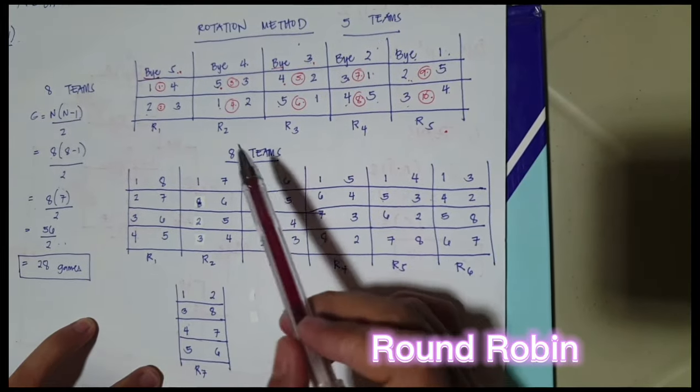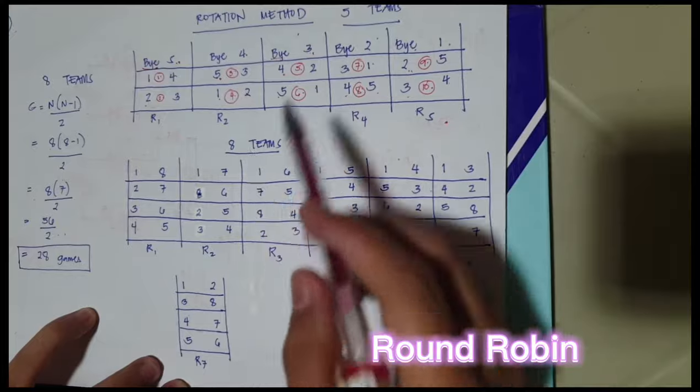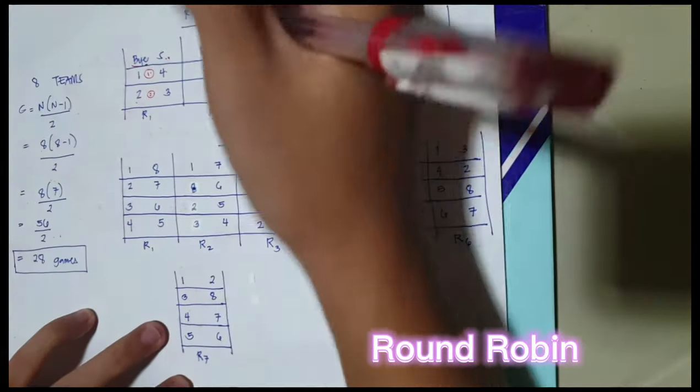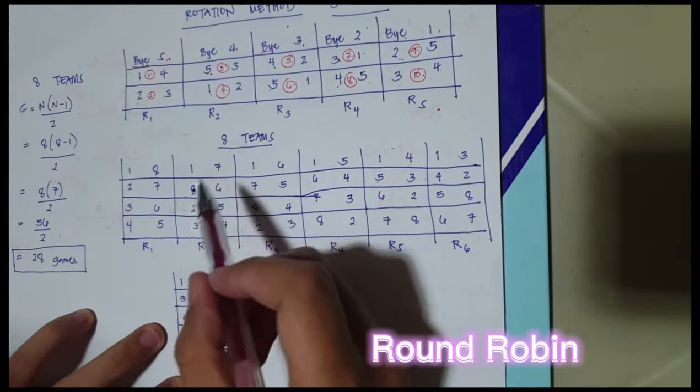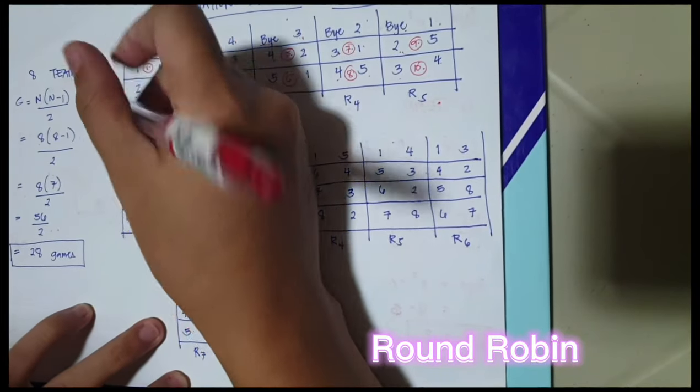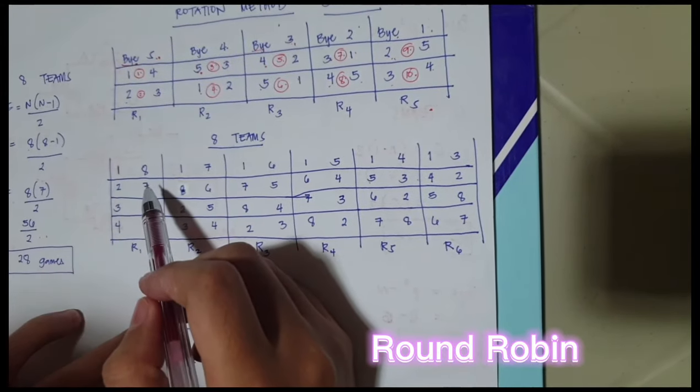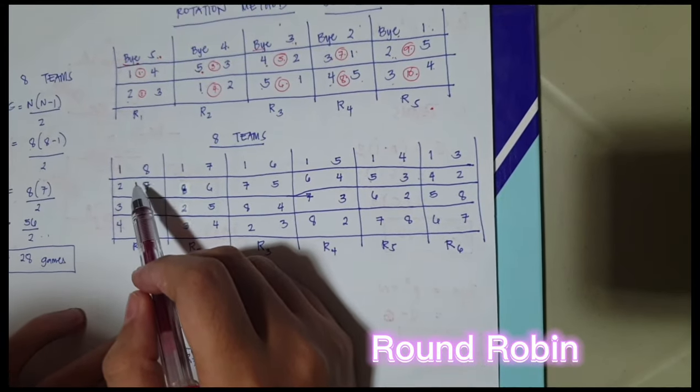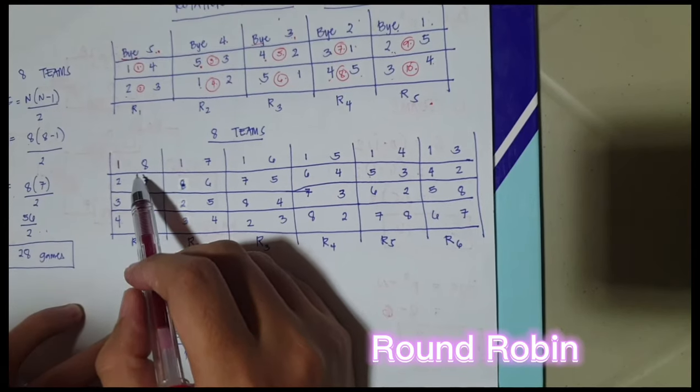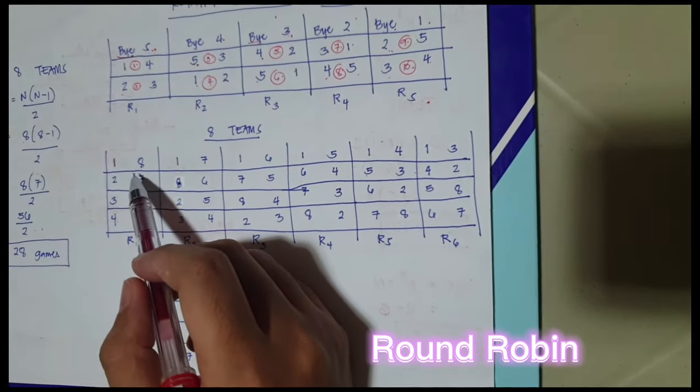Same with the rotation method in 5 teams, but then, since this is an even number, the by here is not required or not applicable. So let's say for example, the 1 here remains fixed, and then the other numbers will rotate around it in a counterclockwise direction. So meaning to say, you're going to the direction to the left.